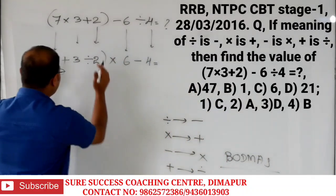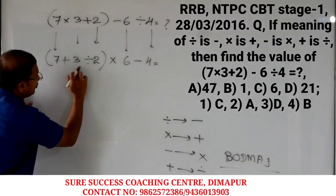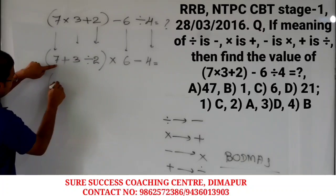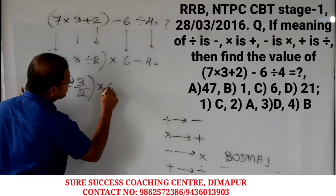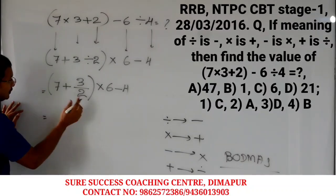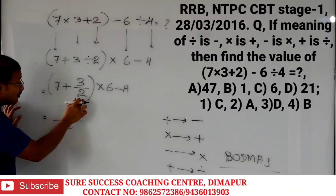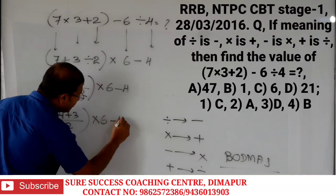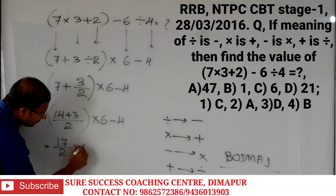Inside the bracket, division is there. Because of division inside the bracket, we do division first. So: bracket 7 plus 3 divided by 2, closing the bracket, into 6 minus 4. We take LCM as 2. So 2 multiplied by 7 is 14, plus 3, closing the bracket, into 6 minus 4. That gives us 14 plus 3 equals 17 over 2, into 6 minus 4.